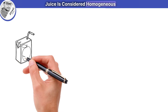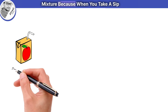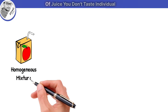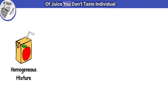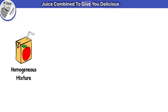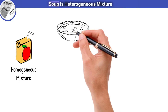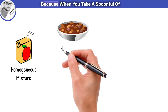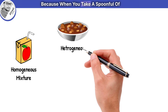Juice is considered a homogeneous mixture because when you take a sip of juice, you don't taste individual parts separately. All the components of juice combine to give you a delicious and refreshing flavor.